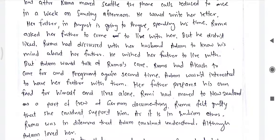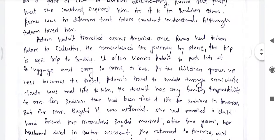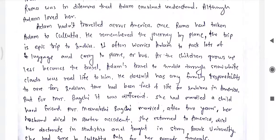Romi, the son, had moved to New Zealand as part of the crew of a German documentary. Ruma felt guilty that she could not support her father in his old age after the death of her mother. As it is in Indian ethos and tradition to care for the parents, Ruma was in a dilemma that Adam could not understand. Although Adam has deeply loved her, Adam hadn't travelled much across America.